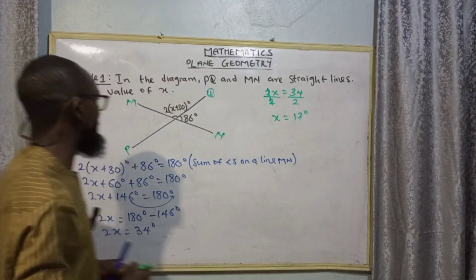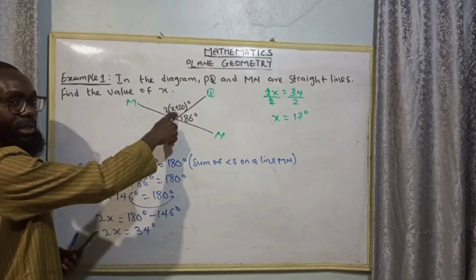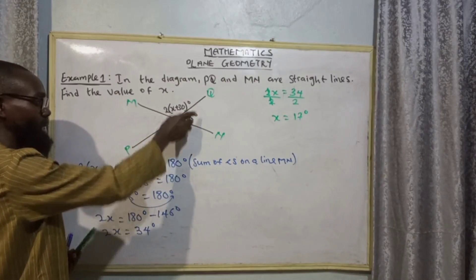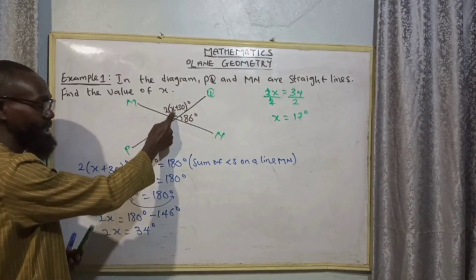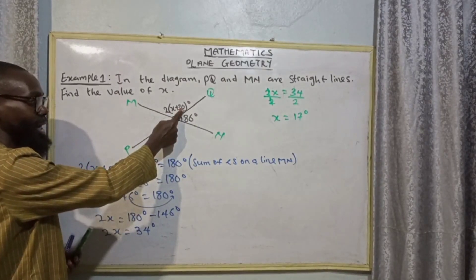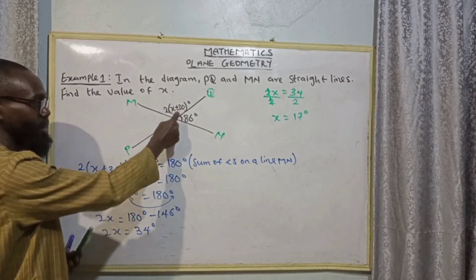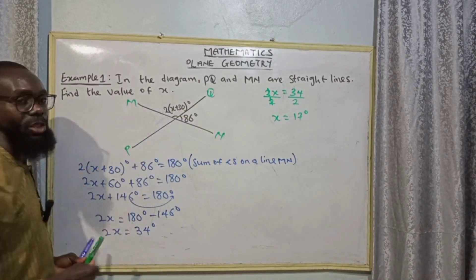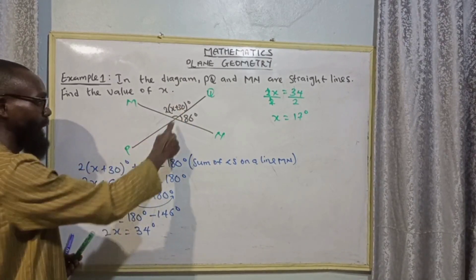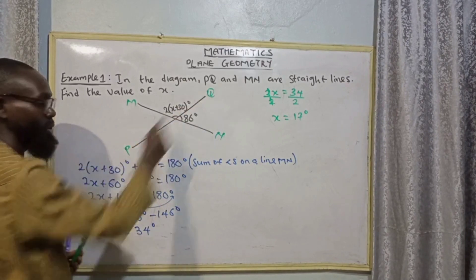The value of X from here is 17. So you can calculate the whole angle here by saying 17 plus 30, that is 47 multiplied by 2. You get the value of angle MOQ.